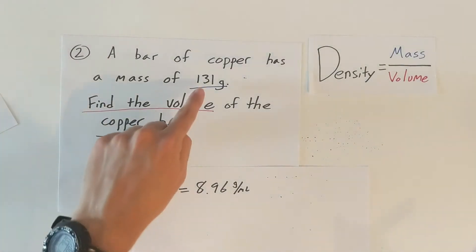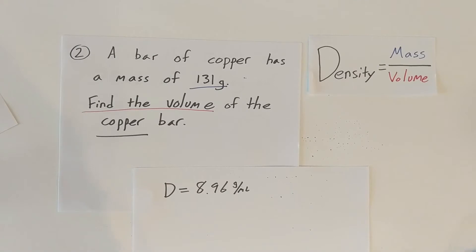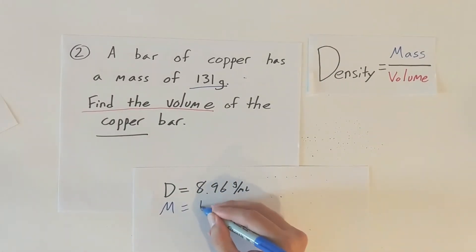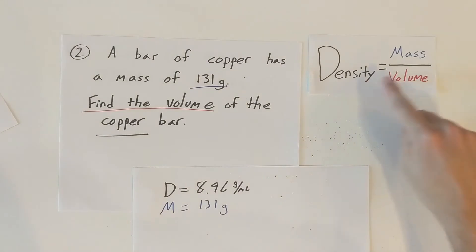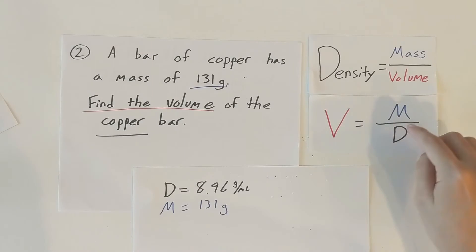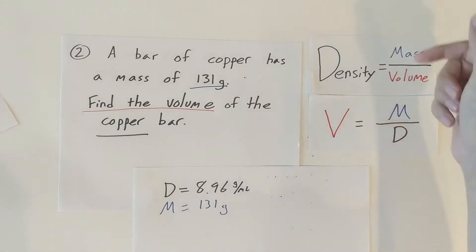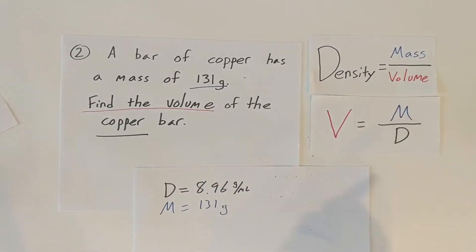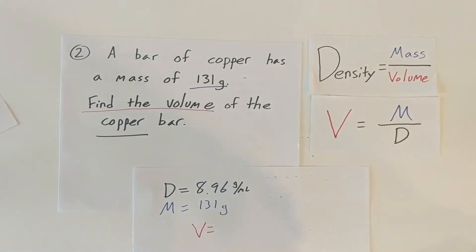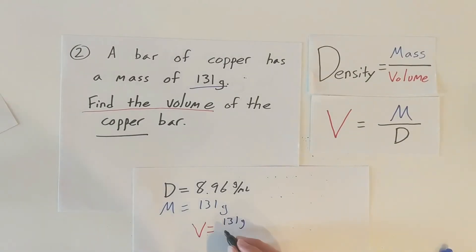We have the mass right here — 131 grams. All we have to do now is find the volume, and we can rearrange our density formula. Using algebra, we get: volume equals mass divided by density.